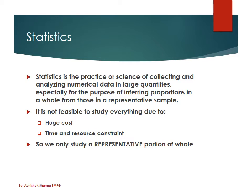First we need to understand two terms. The first one is population — population is the collection of all the cases that could be out there. The second term is sample, which is the cases we can study out of the population. As a statistical researcher, we need to look at population and sample and conduct a study.